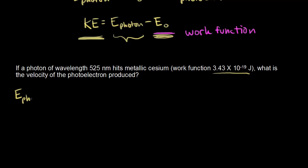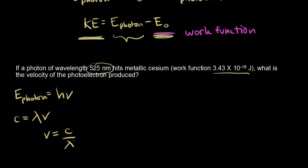The energy of the photon equals H — Planck's constant — times the frequency, usually symbolized by nu. We have frequency, but the problem gave us wavelength, so we need to relate frequency to wavelength. That's related by C, the speed of light, which equals lambda times nu. So we can substitute: frequency equals speed of light divided by wavelength. Now the energy of the photon equals Hc over lambda.